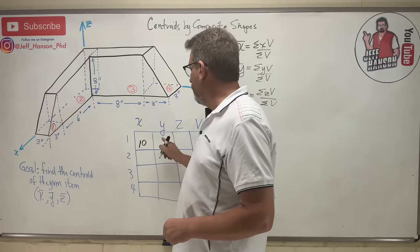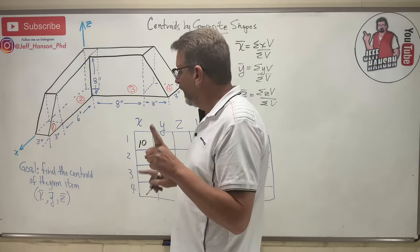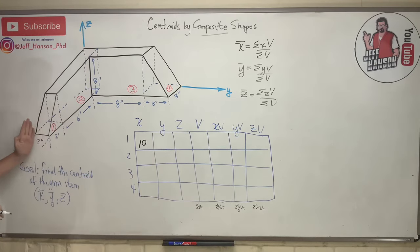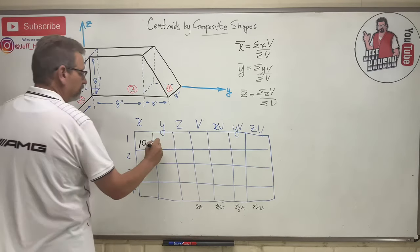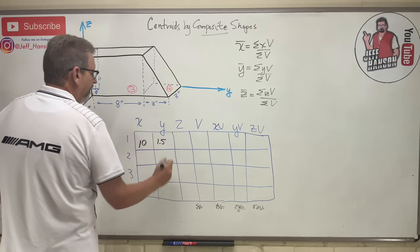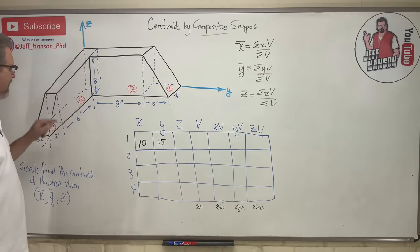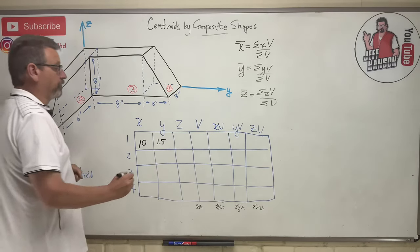What is Y bar for shape number one? Y bar is in this direction. Well, shape number one. So in the Y direction, it's half of the thickness. It's 1.5. And then finally, what is Z bar? Well, this thing is eight inches tall. So where is it? One third, the height, which is eight over three.